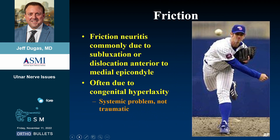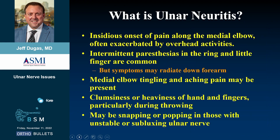Friction neuritis is commonly due to subluxation or dislocation and can often be due to congenital hyperlaxity. You have to know where the nerve is; sometimes there are anomalous branches not where you expect them. Ulnar neuritis is typically the insidious onset of pain along the medial elbow, often exacerbated by overhead activities, intermittent paresthesias in the ring and little fingers, symptoms radiating down the forearm, medial elbow tingling, clumsiness or heaviness of the hand, and possibly snapping or popping if the nerve is unstable.